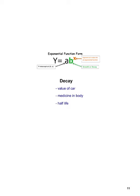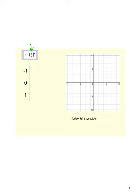The idea of decay is when that b ends up being less than 1. For instance, the value of a car tends to depreciate. The amount of medicine in your body depreciates over time. Half-life of carbon or elements can also be exponential decay. The b value is less than 1, and b equal to 1 is a whole different case since 1 raised to any power is always 1. So we're really looking at b greater than 1 for growth and b less than 1 for decay.